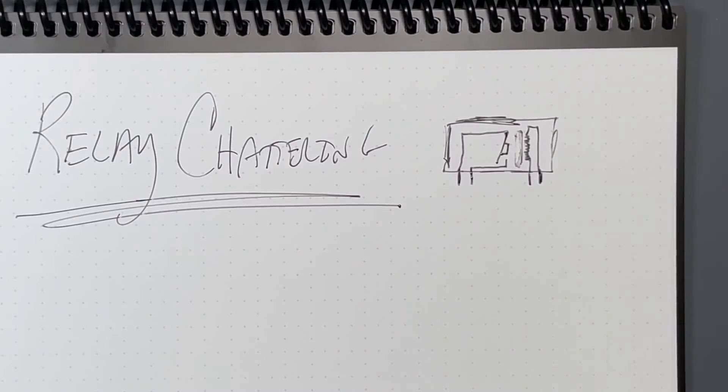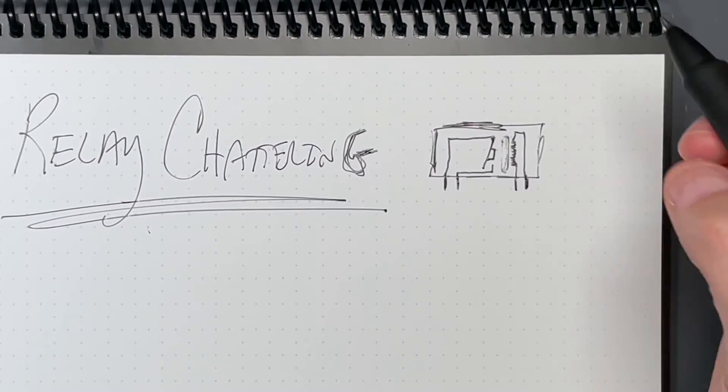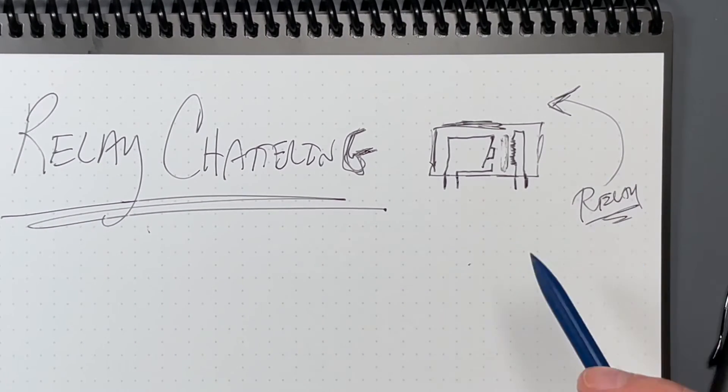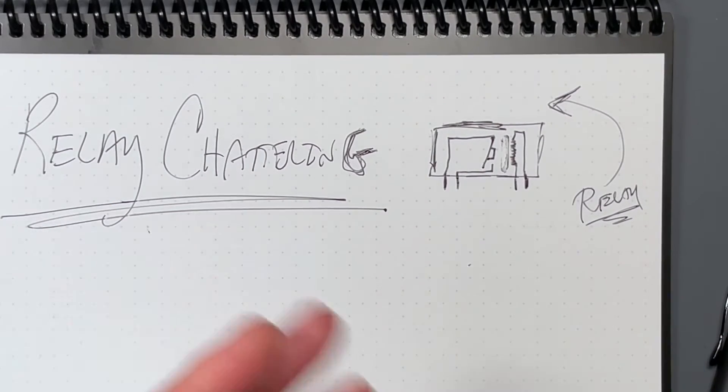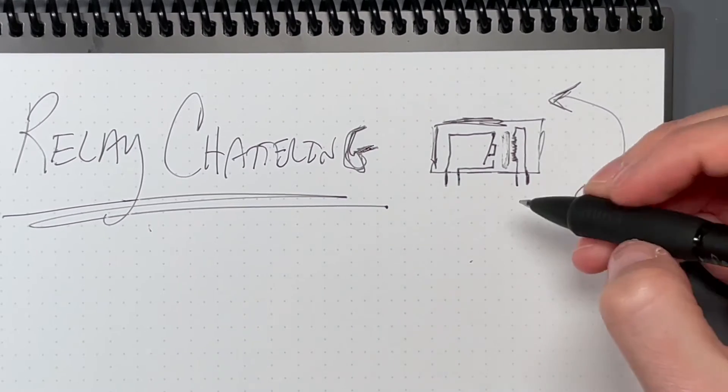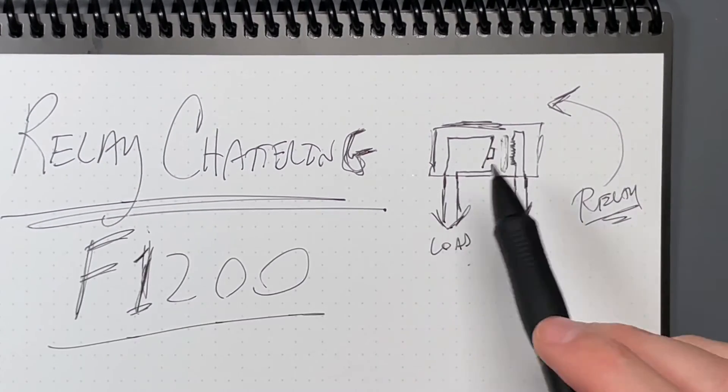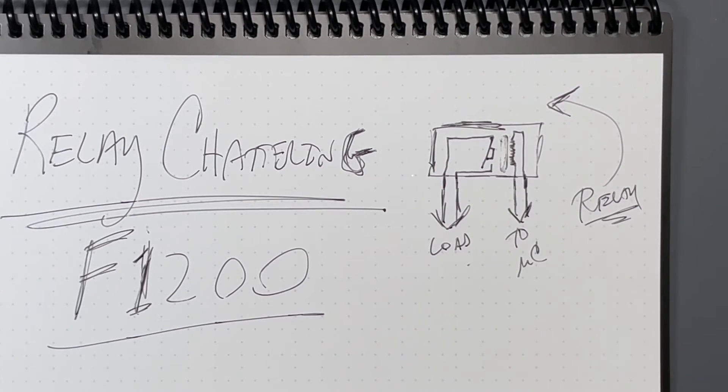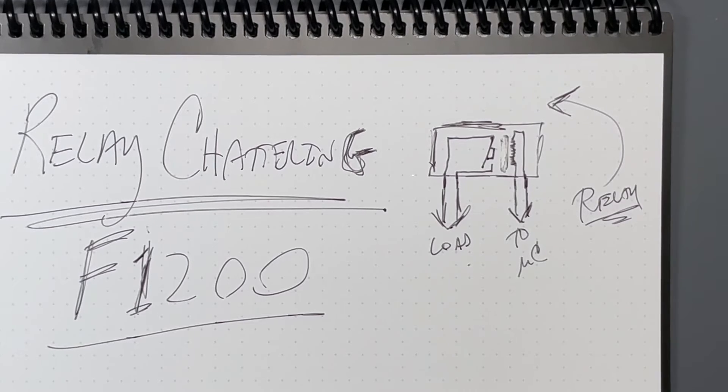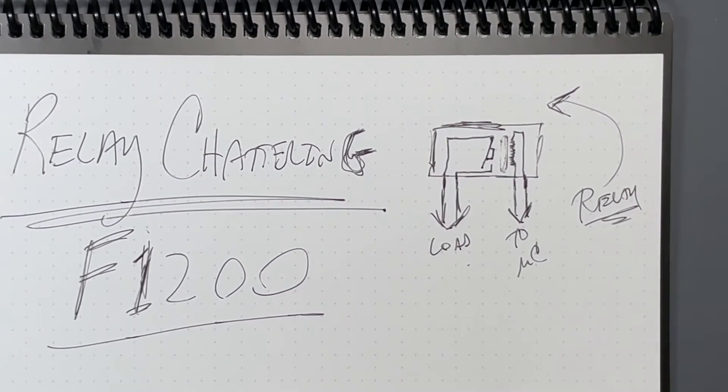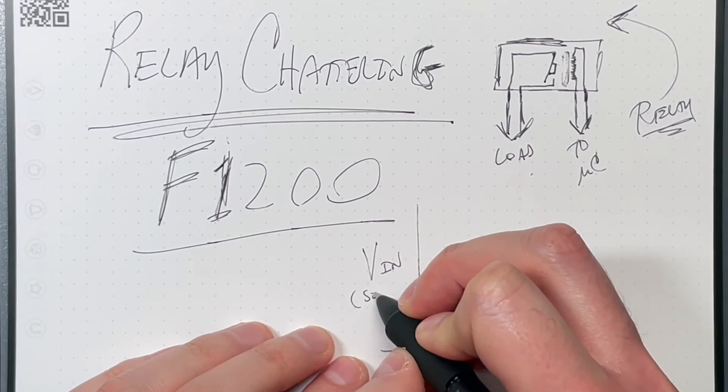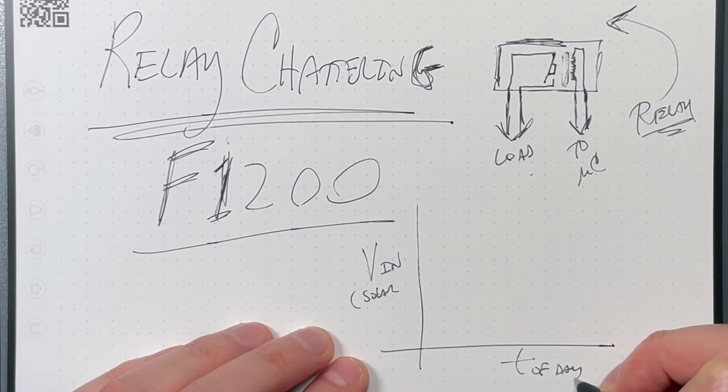The next thing is relay chattering. So what's happening with relay chattering - so this is our relay, and what we have is the coil and the contact. The coil's on this side, the contact's on this side. This is the thing that does the switching bit that powers loads, and then this is where the signal comes from, so this goes to the microcontroller. The F1200 has a relay across the solar input. Our input voltage across time of day.